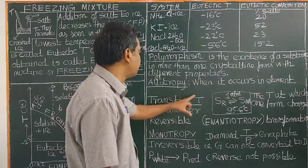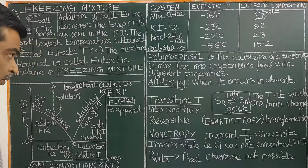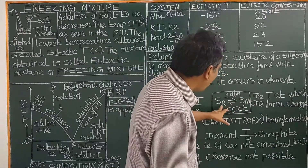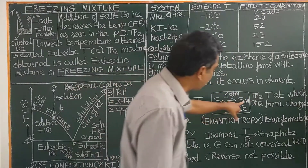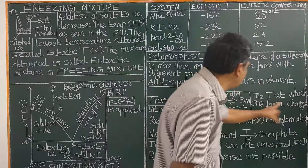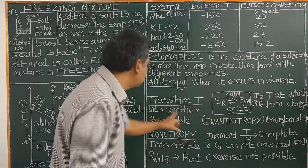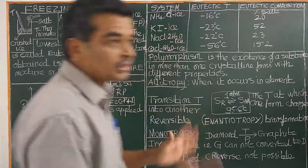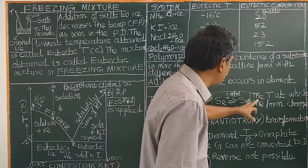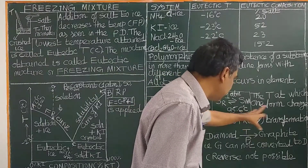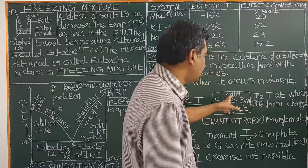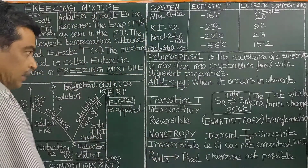What is transition temperature? It is the temperature at which one crystalline form — sulfur rhombic — is converted into another form. What is transition temperature? It is the temperature at which sulfur rhombic is converted to sulfur monoclinic, that is at 95.6 degrees Celsius at one atmospheric pressure. This temperature, 95.6 degrees, is called the transition temperature of sulfur rhombic to sulfur monoclinic.